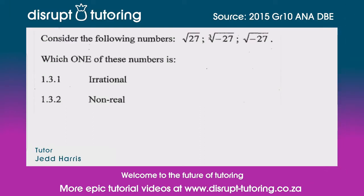Hey peeps, it's Jed here from Disrupt Tutoring. Such a pleasure to join you today. We're going to deal with a question involving irrational and non-real numbers. Consider the following numbers: the square root of 27, the cube root of negative 27, and the square root of negative 27.